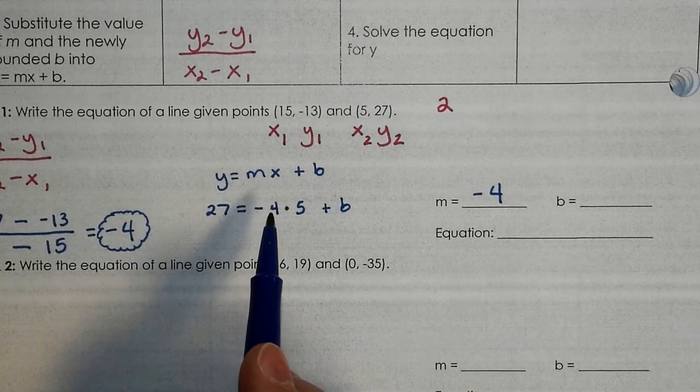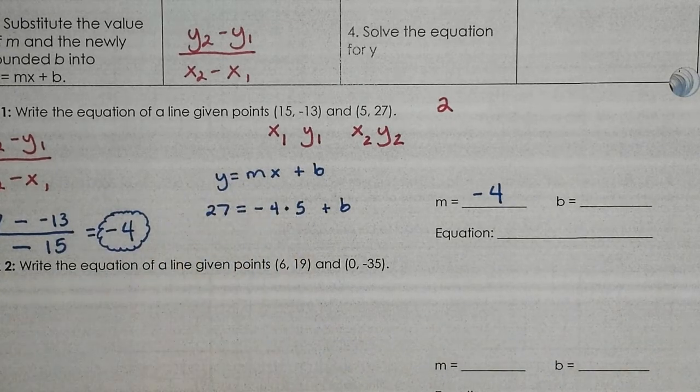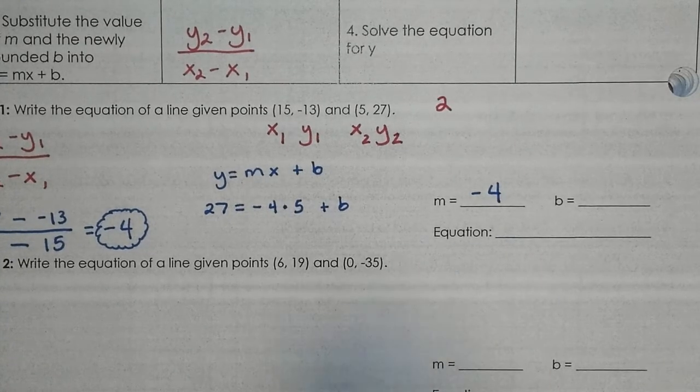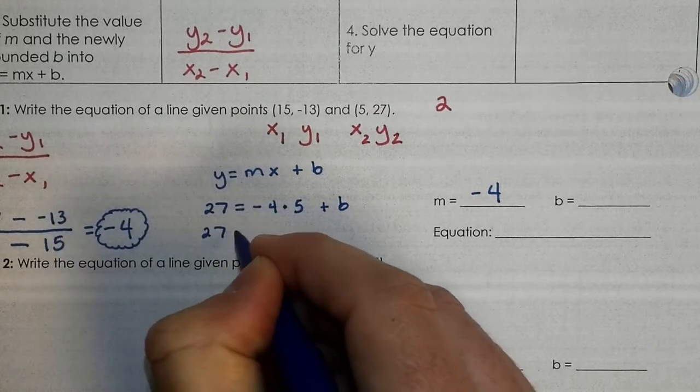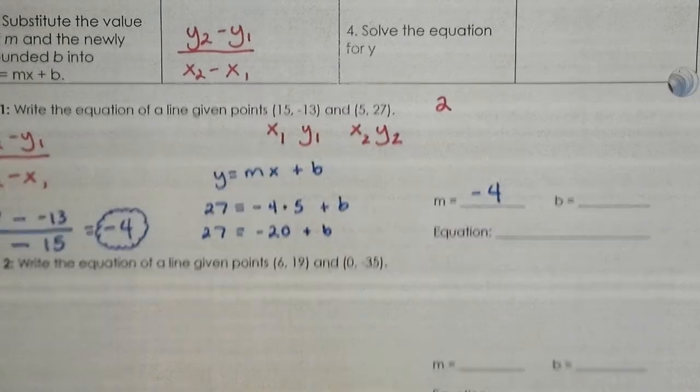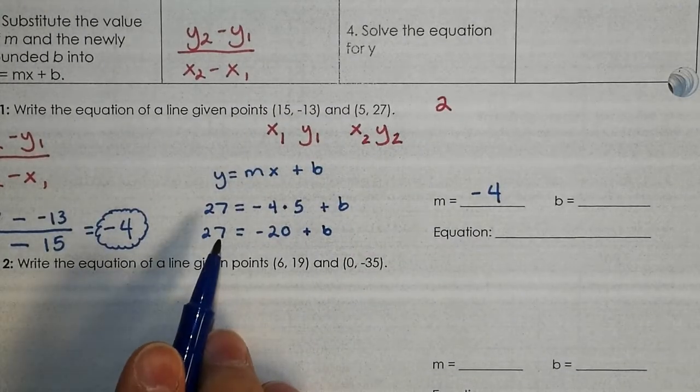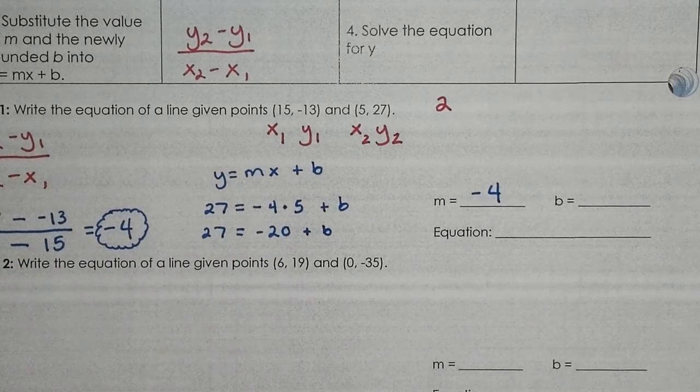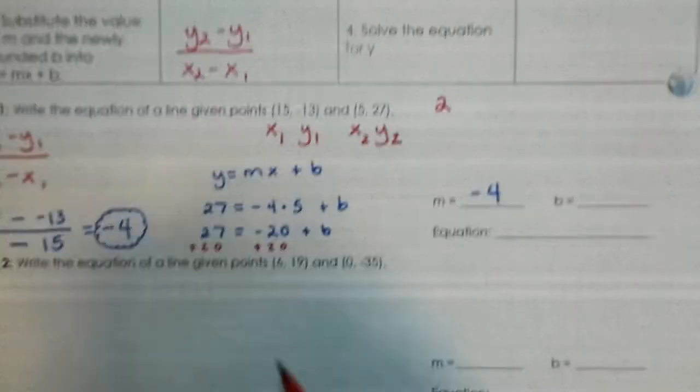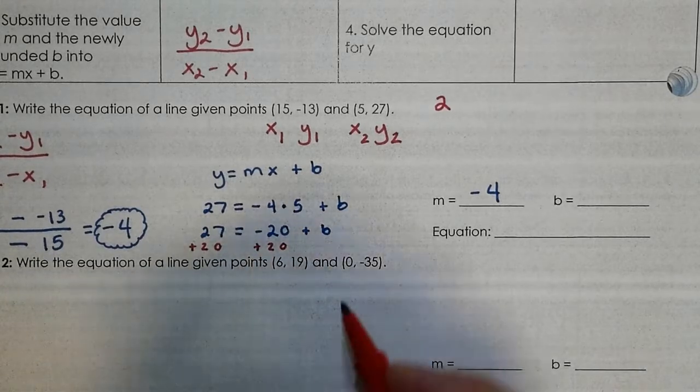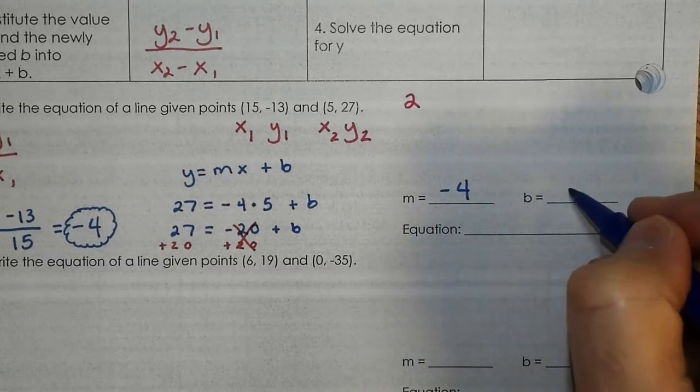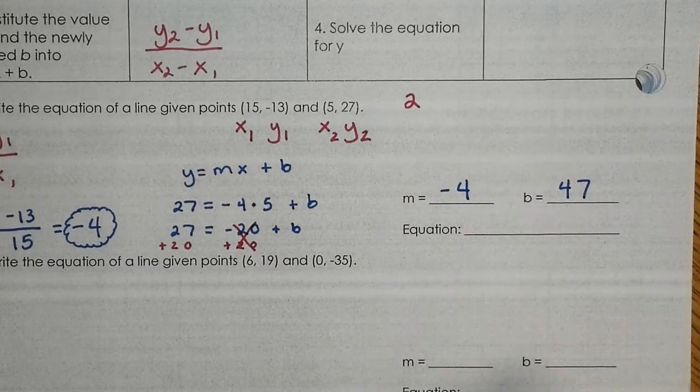All right. Now, what is negative 4 times 5? Negative 20. Negative 20. Yeah, there we go. So, 27 equals negative 20 plus B. All right. And then from there, what's the last step? Add 20 to both sides. So, when you add 20 to a negative 20, and that crosses out. What's 27 plus 20? 47. 47.